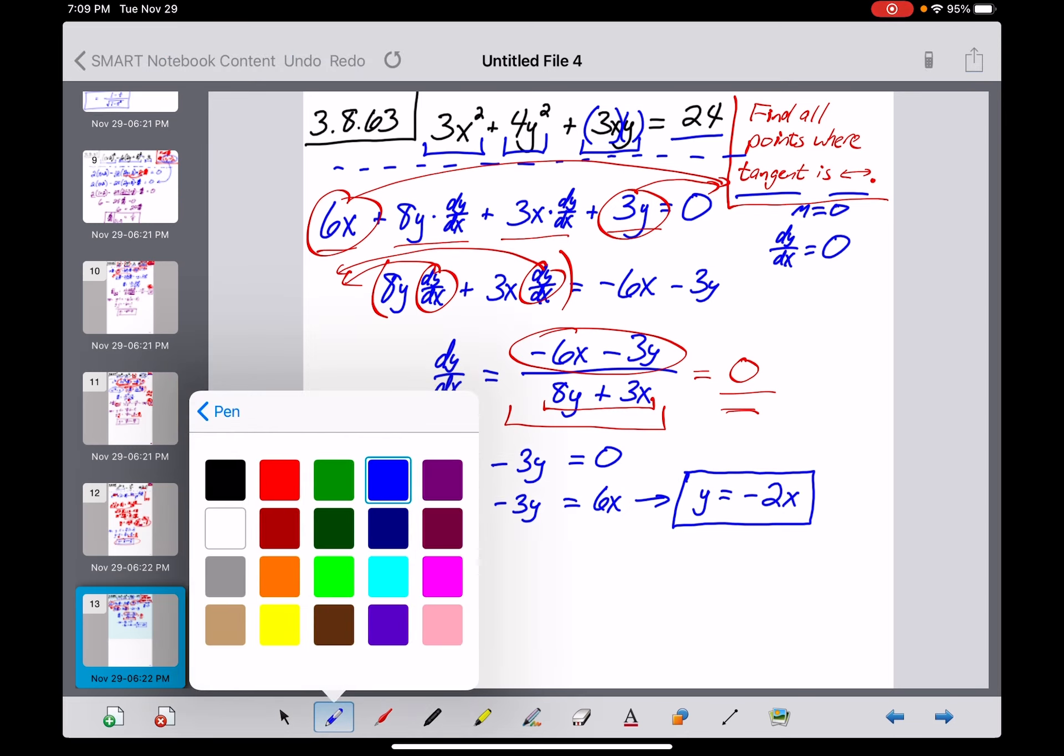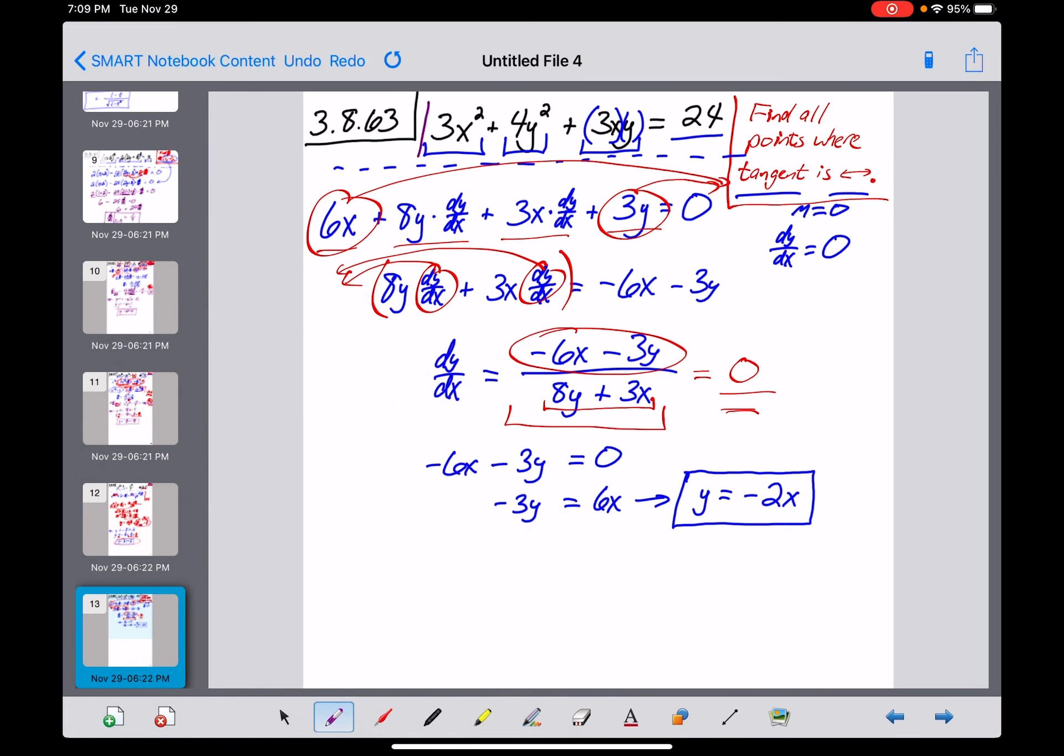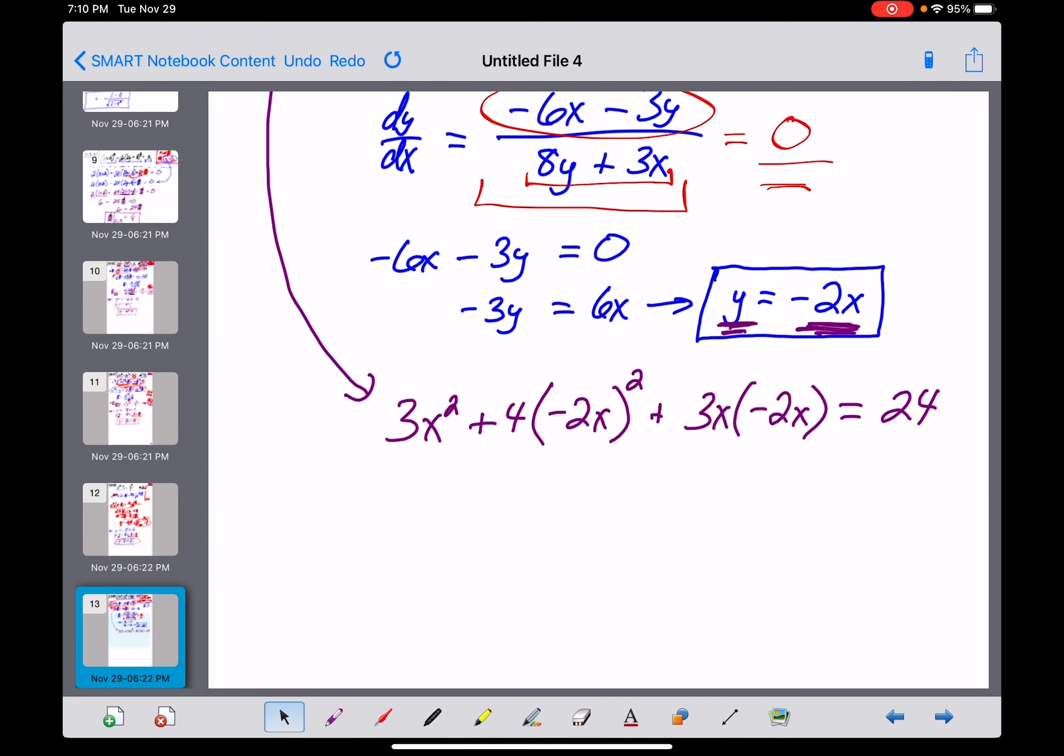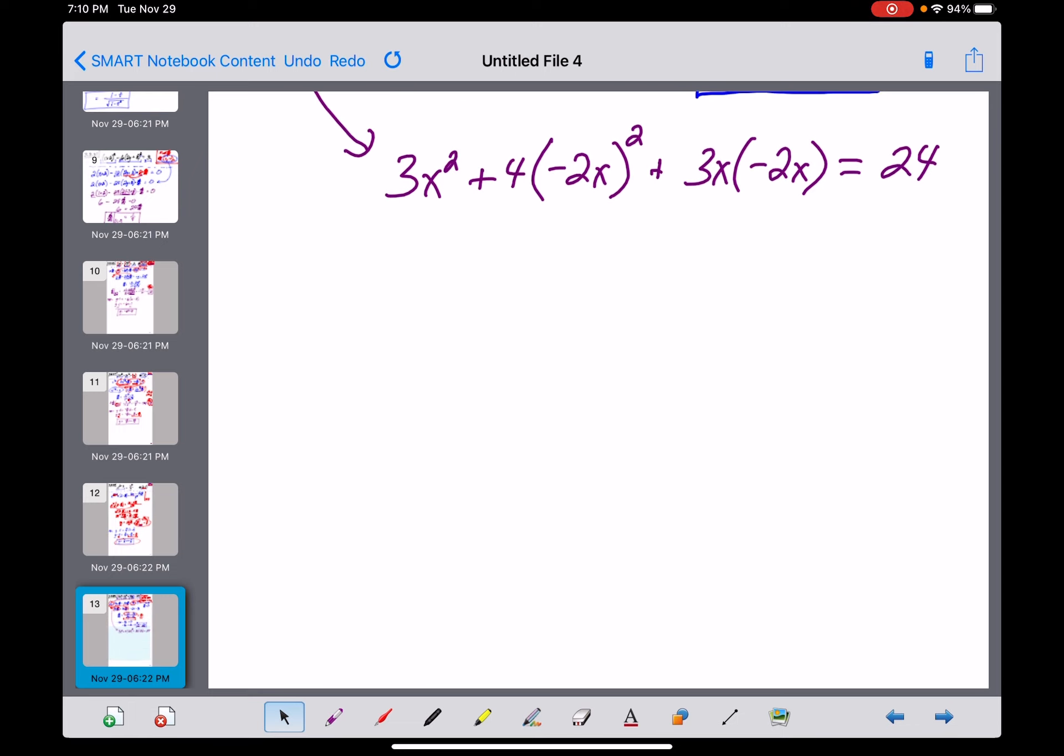What we're going to do now is find everywhere on the original curve up here in black that our y-coordinate is equal to negative 2 times your x-coordinate. So I'm going to bring this equation down here, but I'm going to replace all of the y's with a negative 2x. So I've got 3x squared plus 4 times negative 2x squared plus 3x multiplied by negative 2x, all of which equals 24. And now, this is down to a one variable equation. I think I can, well, hopefully solve this thing for x.